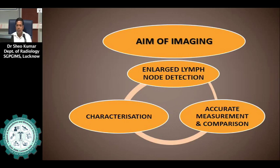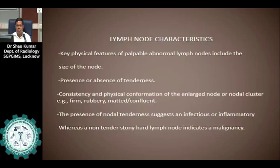The aims of imaging include enlarged lymph node detection, characterization, accurate measurement, and comparison with previous studies. Key physical features of a palpable abnormal lymph node include the size of the node, presence or absence of tenderness, and consistency and physical conformation of the enlarged node or nodal cluster — whether it is firm, rubbery, matted, or confluent. The presence of nodal tenderness suggests an infectious or inflammatory pathology, whereas a non-tender, stony hard lymph node indicates malignancy.